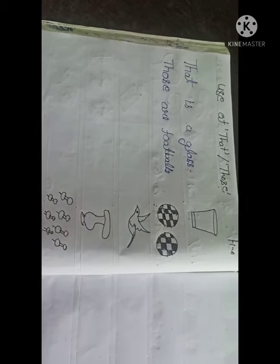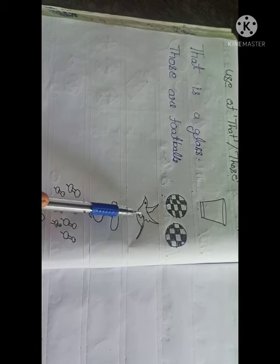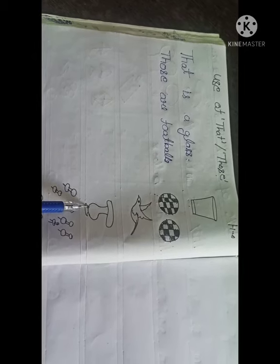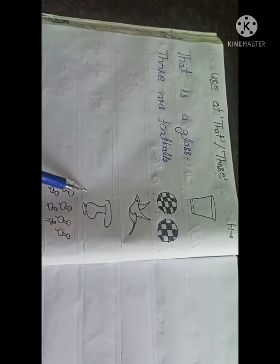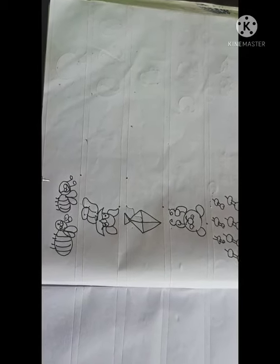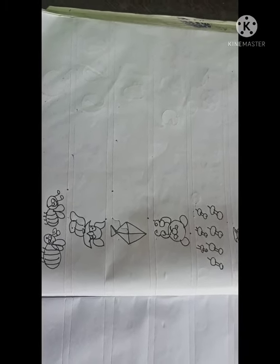Students, that is board. And this is vase. You will do that is vase. And this is pins, there are many pins, so those are pins. And one teddy, that is a teddy. And one kite, so what will you use? That is a kite. And what is this? This is a toy. That is a toy. And this too. So what will be used here? Those are, with those you add are, with that you add is.